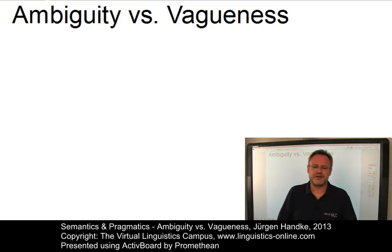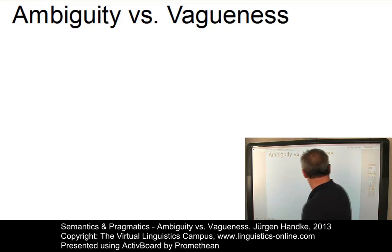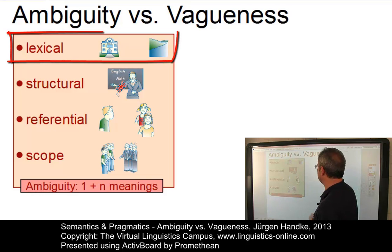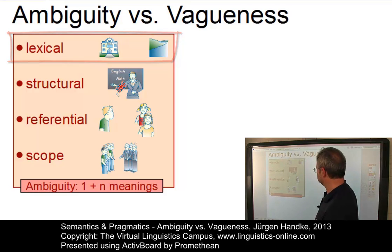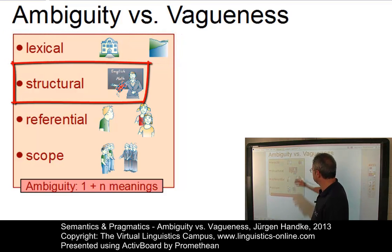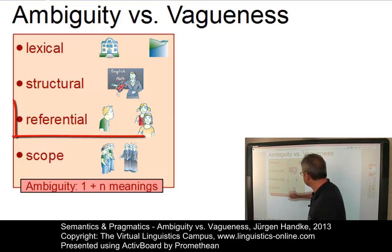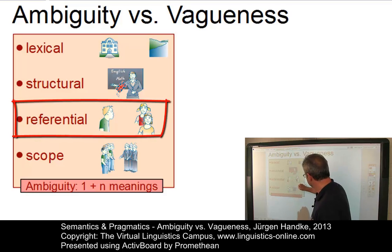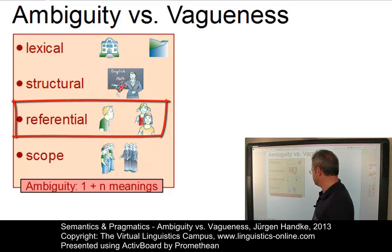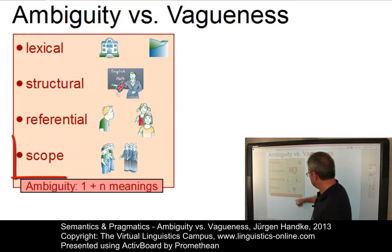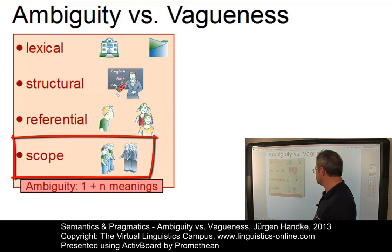Ambiguity is defined as the phenomenon of one linguistic item having several meanings. Here are the main types: lexical ambiguity — examples such as 'bank'; structural ambiguity — our example here is 'she is an English teacher'; referential ambiguity — an example could be 'John kissed his girlfriend'; and 'four students who shot three professors' is one of the famous examples of scope ambiguity.